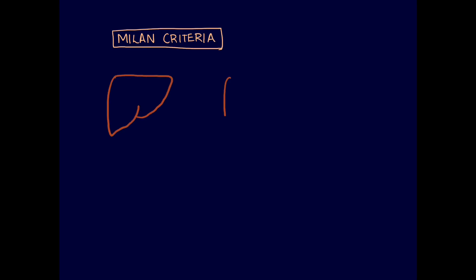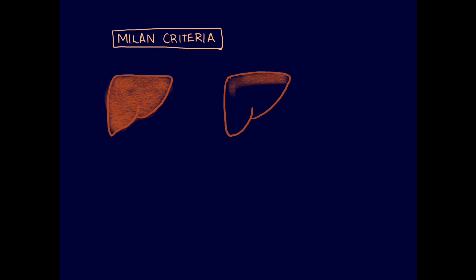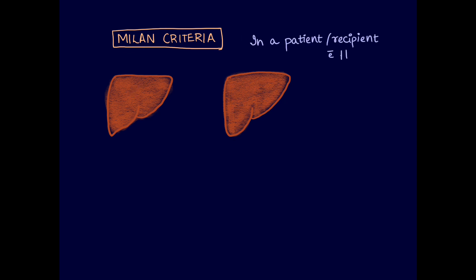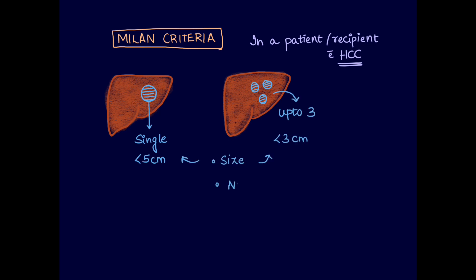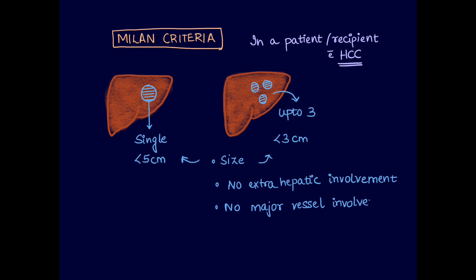Next is the Milan criteria, applicable to patients with hepatocellular carcinoma. If HCC is diagnosed, the following criteria apply: a single nodule must be less than 5 cm; multiple nodules up to 3 in number must each be less than 3 cm. There should be no extrahepatic involvement and no major vessel involvement. This is the Milan criteria.